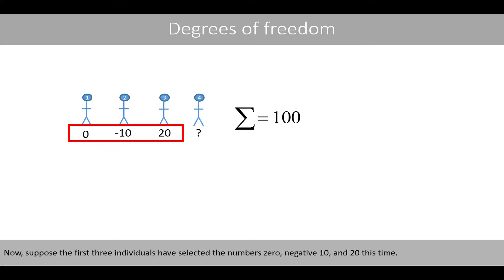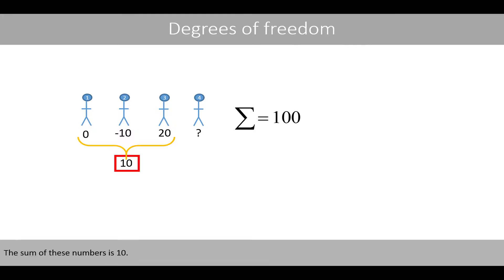Now, suppose the first three individuals have selected the numbers 0, negative 10, and 20 this time. The sum of these numbers is 10. The fourth person therefore has to select the number 90, because the four values should sum up to 100.